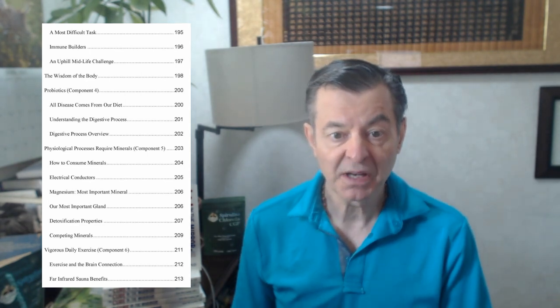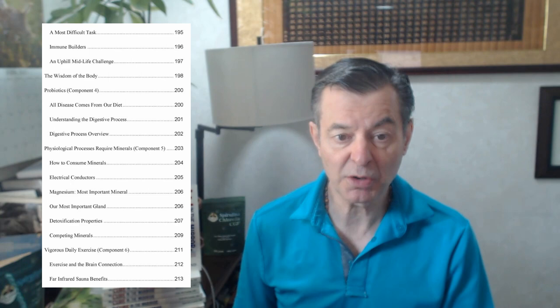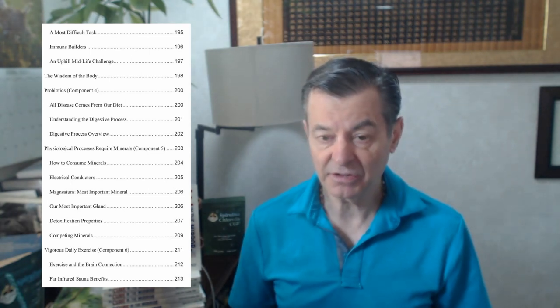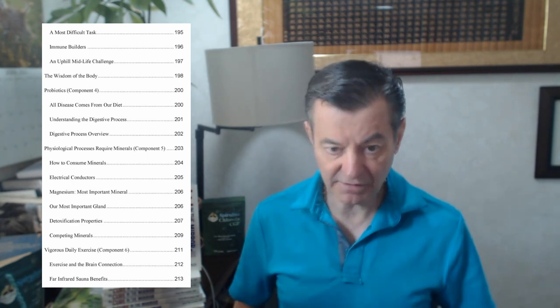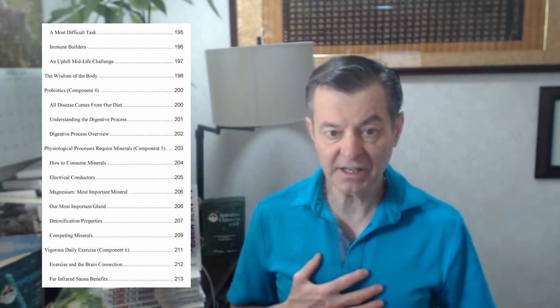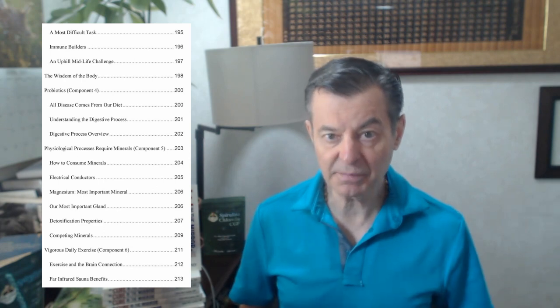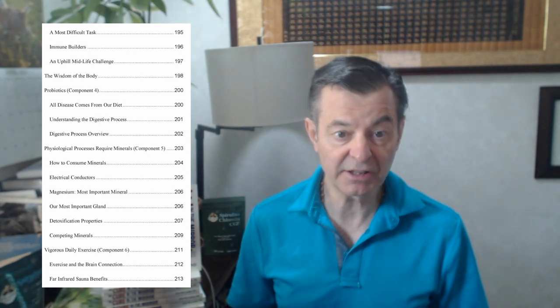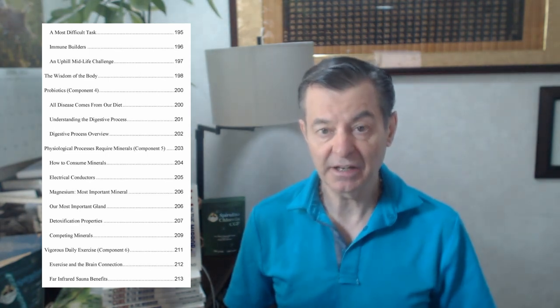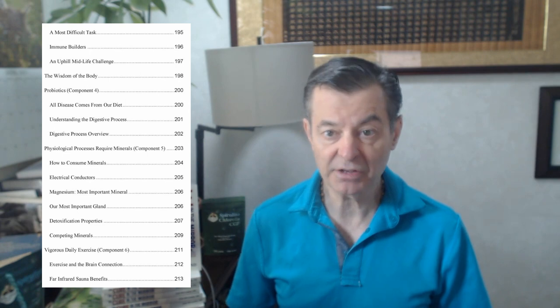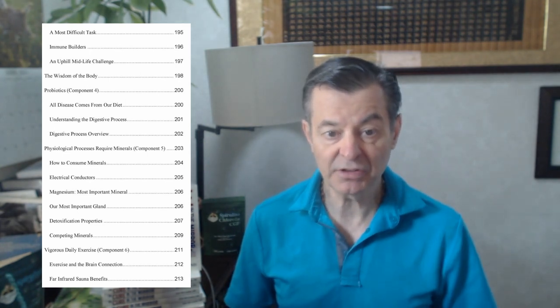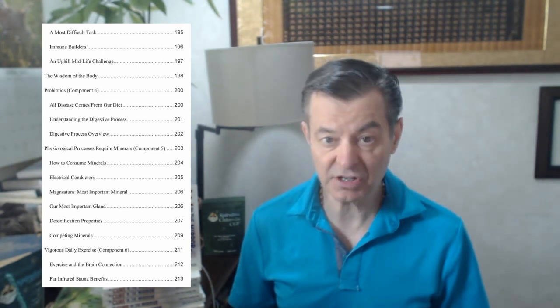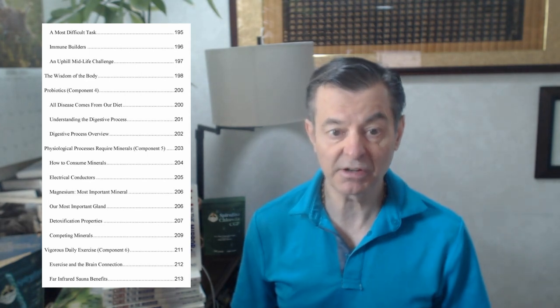Next is probiotics, which is component number four in my seven component health protocol. That's the friendly bacteria. Very important. Since all disease comes from your diet, you've got to have digestive health. We talked about earlier, killing everything in the digestive tract and then putting everything back in a healthy way, putting back the friendly bacteria, the prebiotics, and the fermented foods, and the probiotics. All disease comes from our diet. Exactly. So that's the importance of having digestive health. Really the most important thing, digestive health.